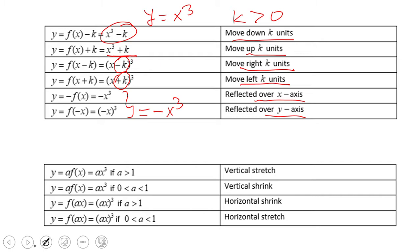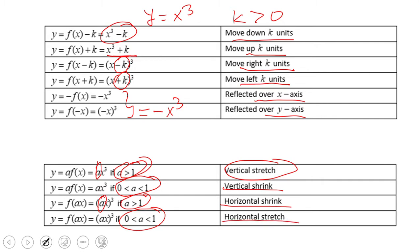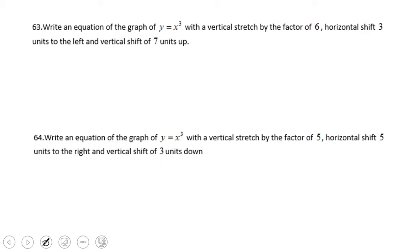Non-rigid transformations do change the shape. A vertical stretch occurs when a number a greater than one is in front of x cubed — for example, 2 or 3. A vertical shrink occurs when a is between zero and one. If the number is greater than one and placed inside the parentheses, that's a horizontal shrink; if between zero and one inside the parentheses, that's a horizontal stretch.